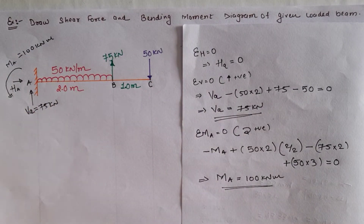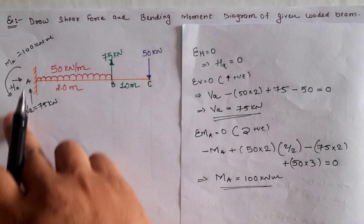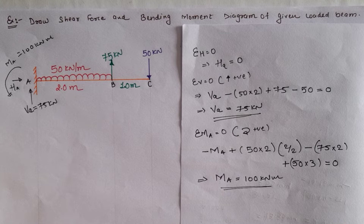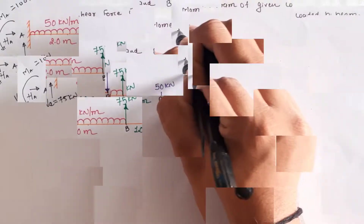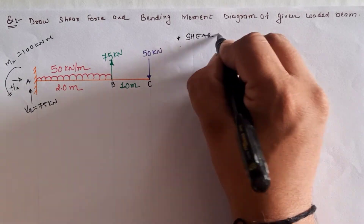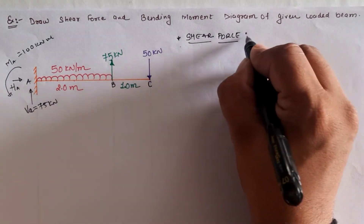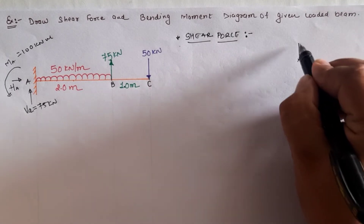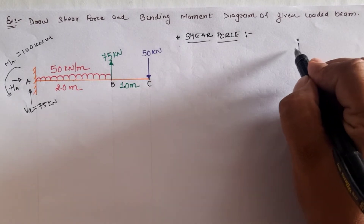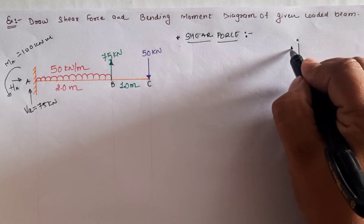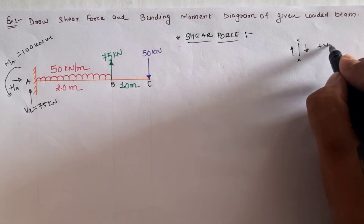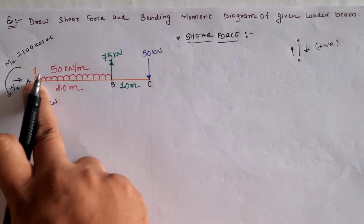With support reactions determined using the three equilibrium conditions, we now proceed to calculate the shear force at different points. The sign convention adopted is: upward force on the left-hand side of a section and downward force on the right-hand side of a section is taken as positive.